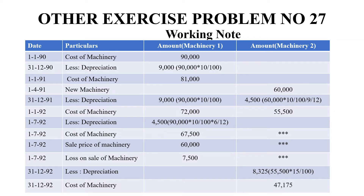On 1992, the cost of Machinery 1 is 72,000 and Machinery 2 is 55,500. On 7/1992, the first machinery has been sold. Using the Straight Line Method up to the point of sale — 6 months — the depreciation is 90,000 × 10/100 × 6/12 = 4,500. The net book value is 67,500, but it was sold for 60,000, giving a loss on sale of 7,500.